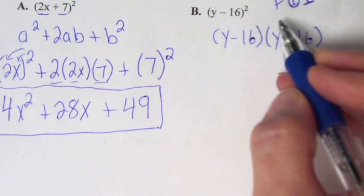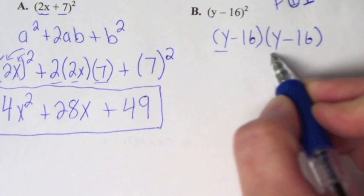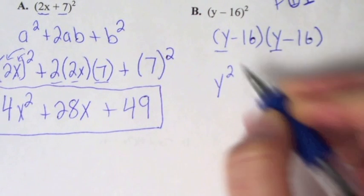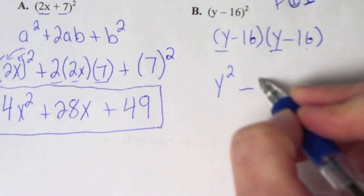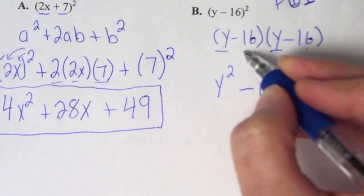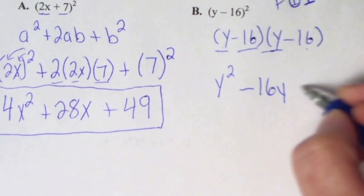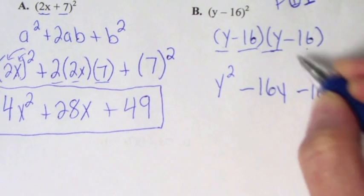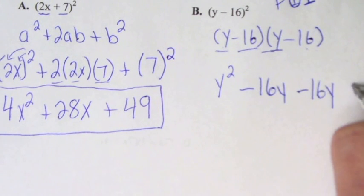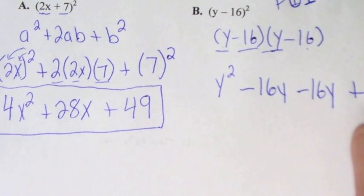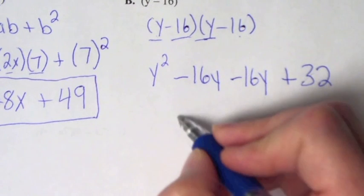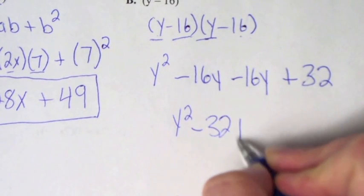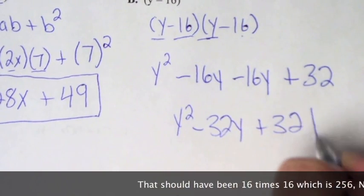So first is y times y, giving y squared. Our outer terms are y times negative 16, giving negative 16y. Our inner terms are negative 16 and y, giving another negative 16y. Then negative 16 times negative 16 gives positive 256. Combining the middle terms gives y squared minus 32y plus 256.